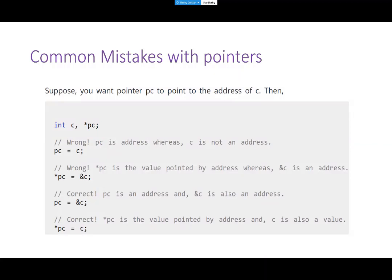We talked about common mistakes when working with pointers — mainly when assigning a pointer to a value or variable. Make sure you are assigning address to address or value to value. For example, you can't say pointer_c equals c, because one is an address and the other is a value. Asterisk pc gets the value whatever the pointer is pointing to, and ampersand gives an address. So make sure you go with the right assignment: value to value or address to address.